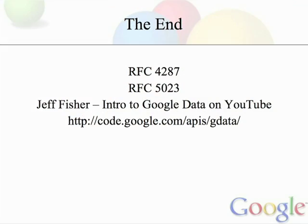So that finishes our overview of the Atom Publishing Protocol. If you want to learn more, you can always read RFC 4287, which is the internet standard for the Atom syndication format. You can also read RFC 5023, which is the IETF standard for the Atom Publishing Protocol. A good video to follow this one is Jeff Fisher's Intro to Google Data, also available on YouTube, which covers how Google has implemented some of these standards. And finally, you can always go to code.google.com/apis/gdata, which covers all of the documentation for Google's APIs. Thanks, and have fun.